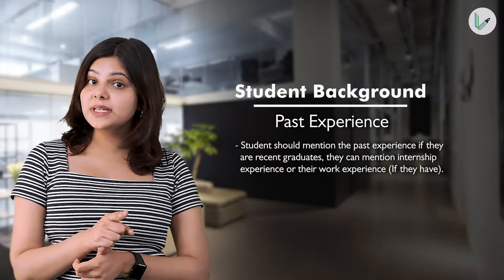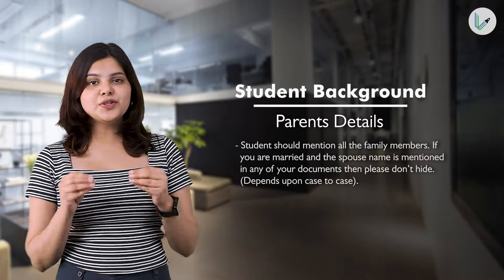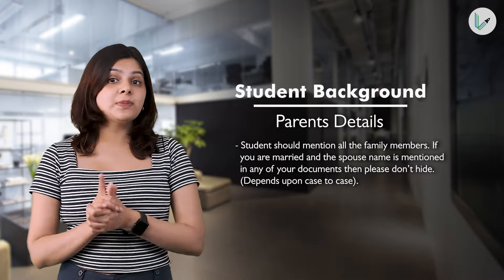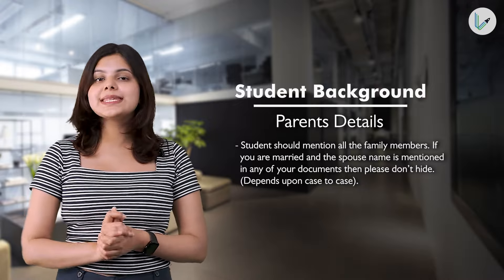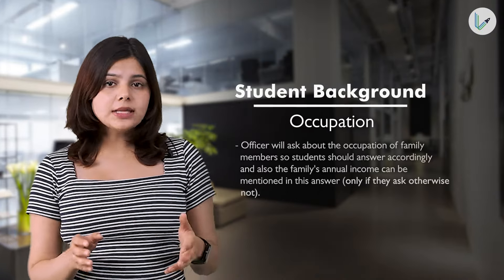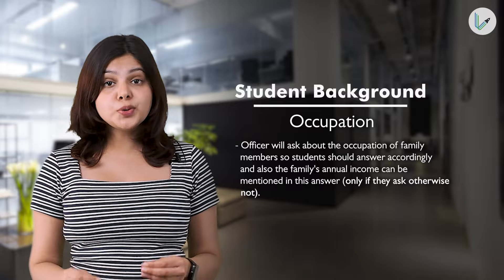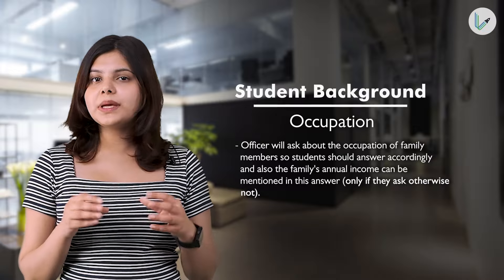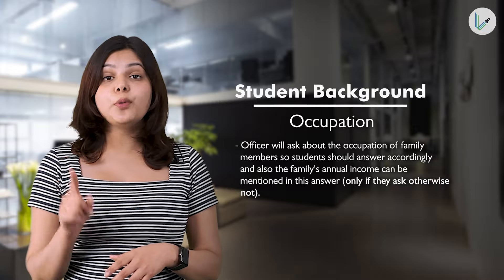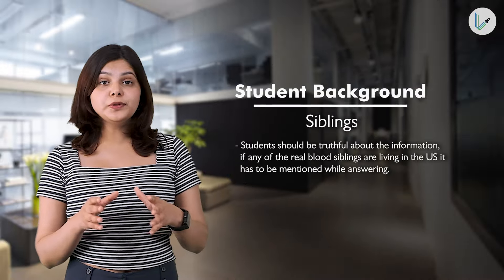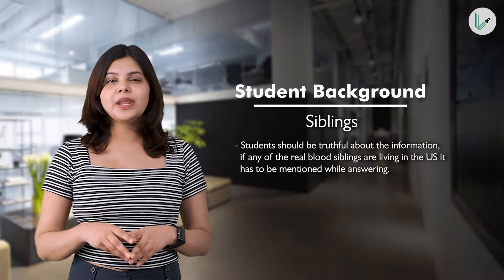If students are recent graduates, they can mention internship experience or work experience. For parent details, students should mention all family members. If you're married and your spouse's name is mentioned in any of your documents, don't hide it. The officer can ask about the occupation of family members, and the family's annual income can be mentioned — but only if asked.